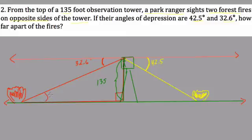So this angle is also 32.6 degrees. And now we're just back to an angle of elevation problem. Because the tangent of 32.6 degrees equals the opposite, which is 135 feet, over the adjacent. Now, we don't know the adjacent side, that's how far the red fire is. But we'll use that in a moment.